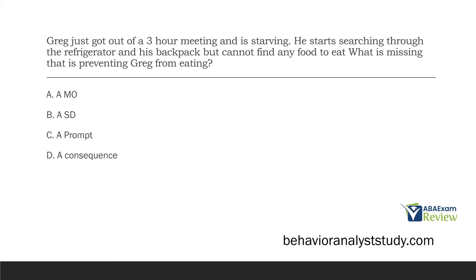D, a consequence: the consequence is going to happen after Greg finds food or after Greg eats. Before that happens, something has to tell Greg to do this and he can eat. The motivation is there, the MO is there, but Greg is missing an SD, which is preventing him from eating.